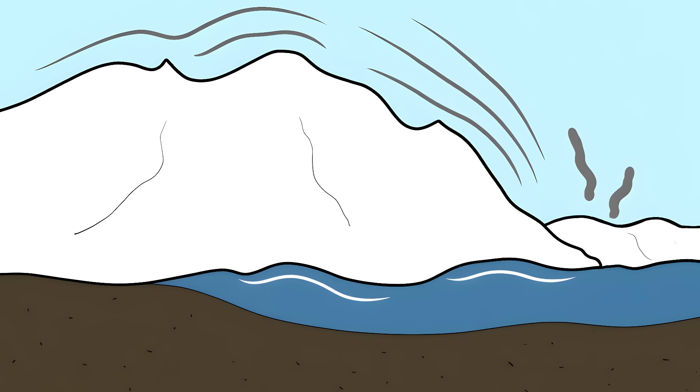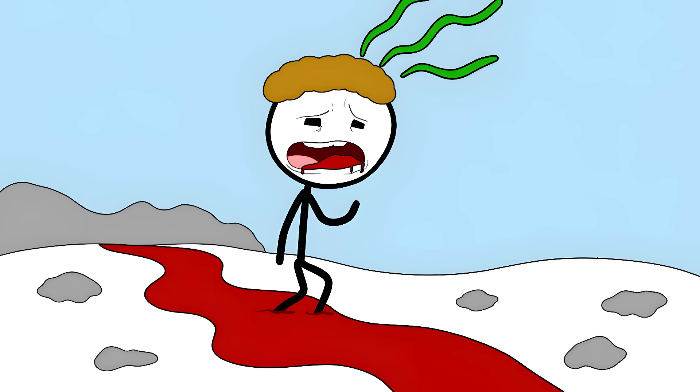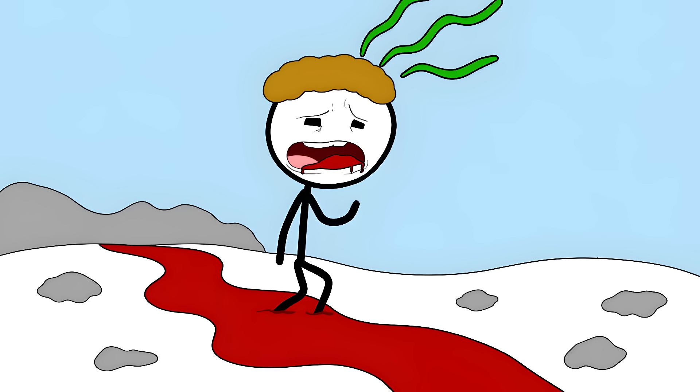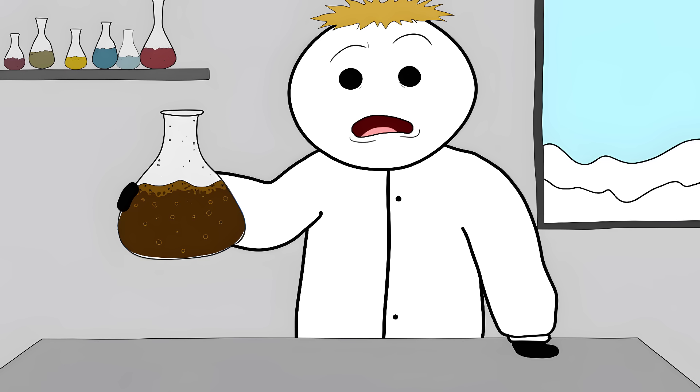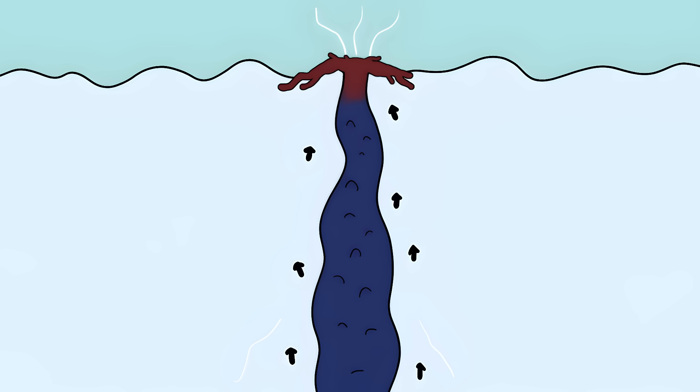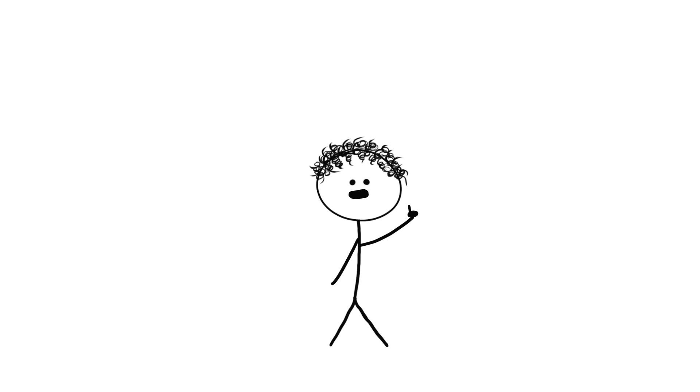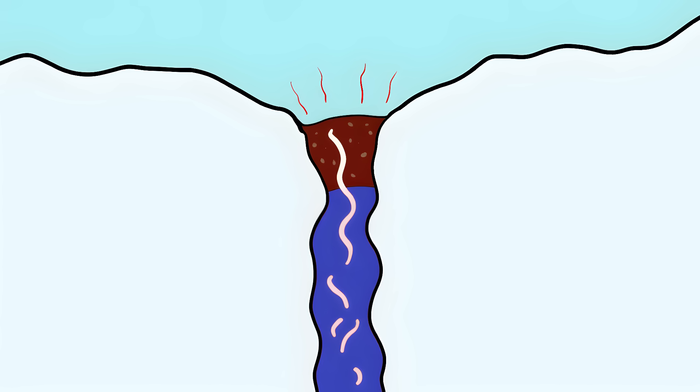Two million years ago, a small lake got trapped under this massive glacier. It's been sitting there in total darkness ever since. No light, no oxygen. The water is so salty it can't freeze. Over millions of years, the water has been dissolving iron from the rocks below. The lake is now basically liquid rust waiting to happen. When this ancient water finally squeezes through cracks in the ice, the iron hits oxygen for the first time in two million years. It instantly rusts. The blood is just flash rust happening right before your eyes.